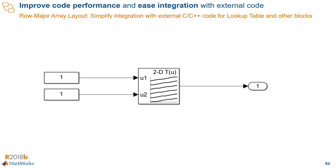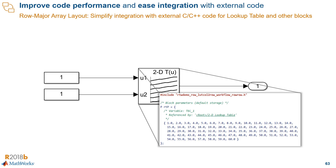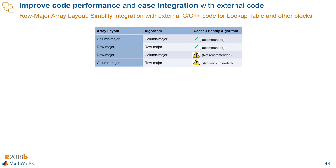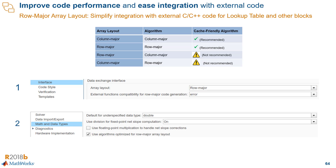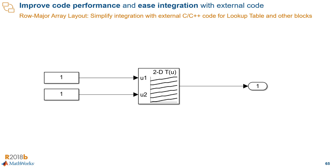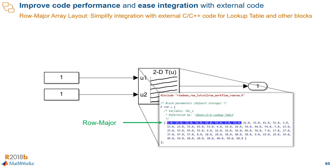Say you want to generate code for this lookup table. By default, you would get column major code, but we can change that with just a few clicks. The first thing is to make sure that the array layout setting matches the algorithm setting in the configuration parameters of the model. Under the interface pane, we select row major for the array layout. Under the math and data type optimizations pane, we check algorithms optimized for row major array layout. Then we build the model, and now you see that when we auto-generate code, we get efficient code in row major layout.